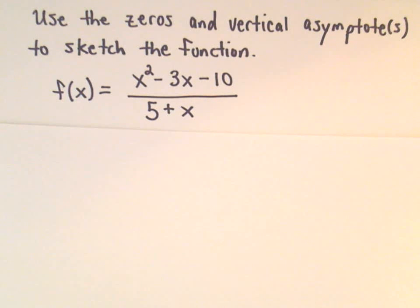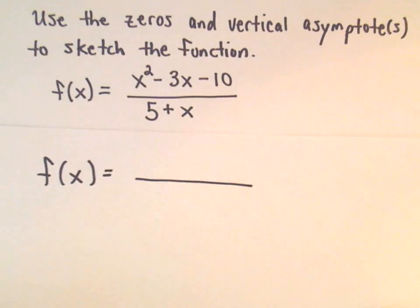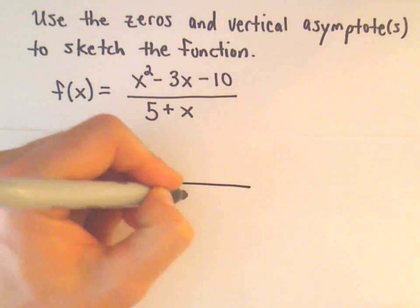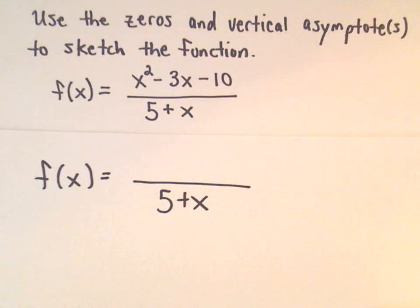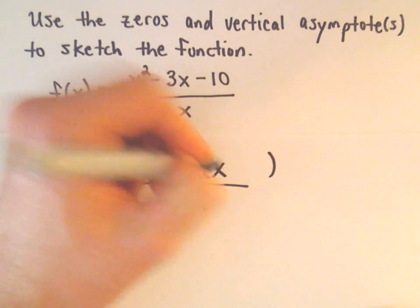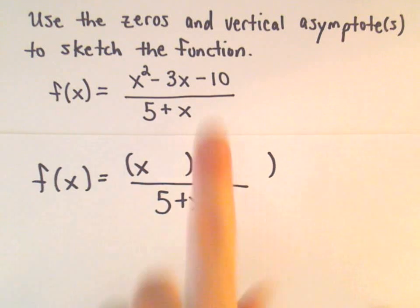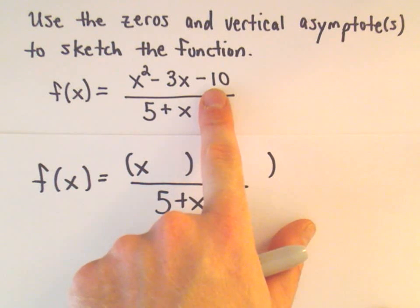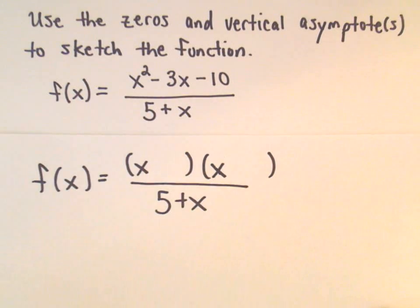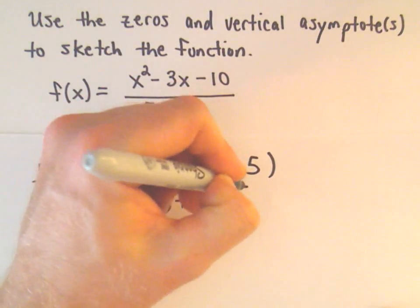So the first thing I'm going to do is find the zeros and vertical asymptotes. And to do that, I'm going to factor the numerator and the denominator. There's really nothing to do in the denominator, but the numerator is a quadratic. So since the coefficient of x squared is positive 1, for these types, we just need two numbers that multiply to negative 10 but add to negative 3. I think positive 2 and negative 5 would do that.